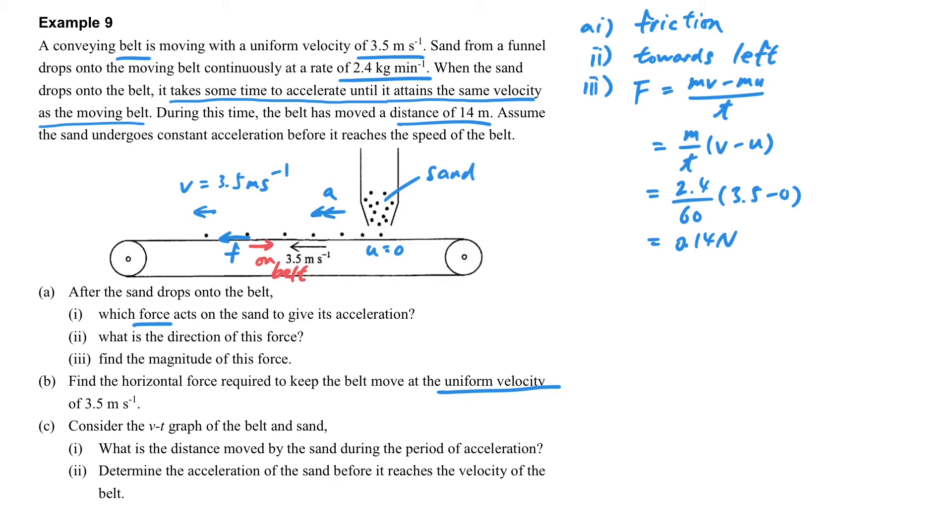So you can see the red arrow here. And that means we have to provide an opposite direction force in order to move the belt with a uniform velocity. Because it's a uniform velocity, the force here should be the same as the force that opposes the belt to move, which is the friction 0.14.